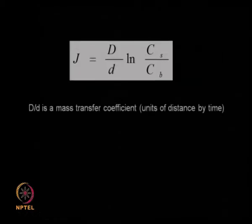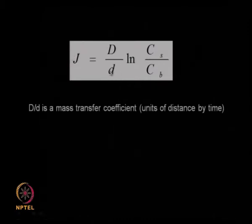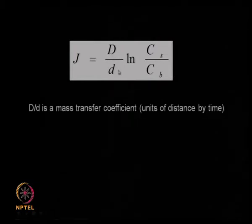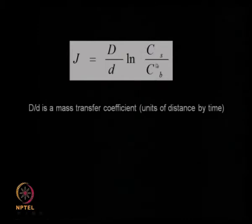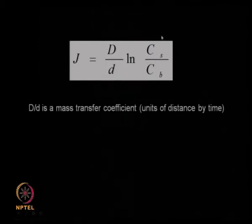If we solve that equation we get a relationship for the flux in terms of D/δ. D/δ is called the mass transfer coefficient, multiplied by the logarithm of C_s/C_b, where C_b is the bulk concentration and C_s is the concentration near the wall due to concentration polarization.